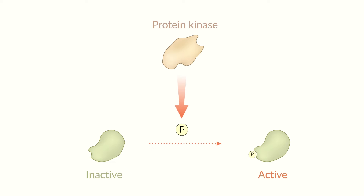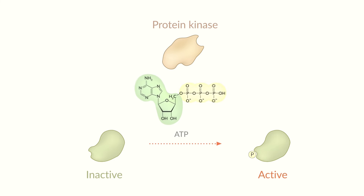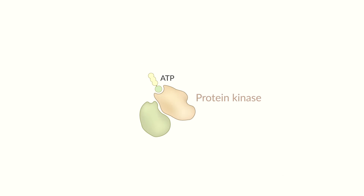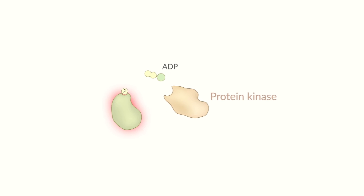Let's go through this step by step. Protein kinases usually use adenosine triphosphate, in short ATP, as a source of phosphate. ATP is composed of adenosine and three phosphate groups. Protein kinase binds ATP as well as the target protein, and then transfers a phosphate group. The phosphorylated protein and the remaining adenosine diphosphate are subsequently released by protein kinase.